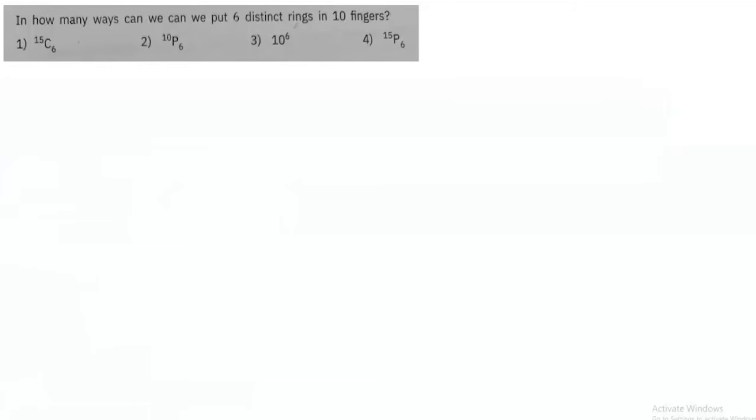This question in permutation and combination asks us to find the number of ways in which we can put certain distinct rings on 10 fingers. You will find that the answer to this question at many places is wrong.